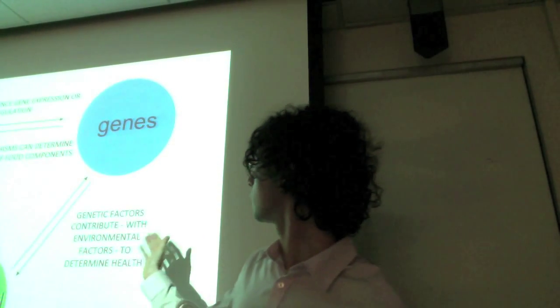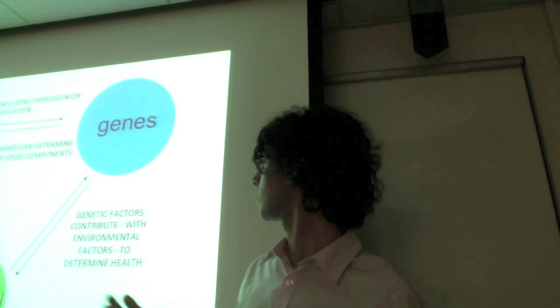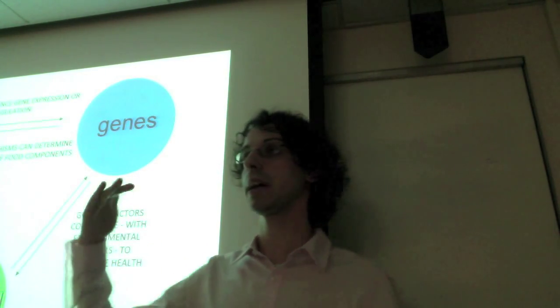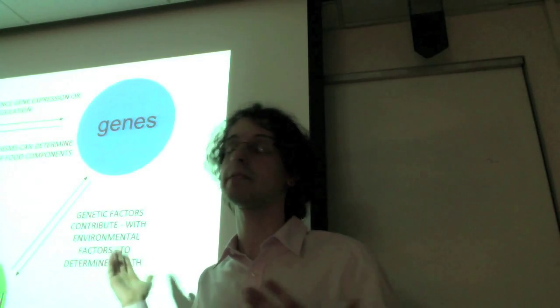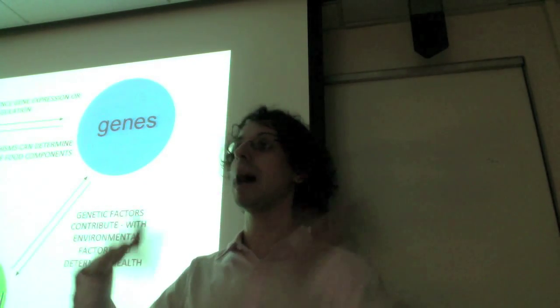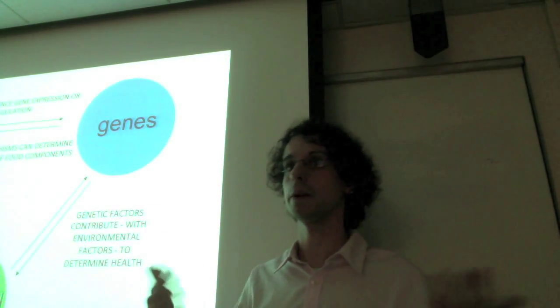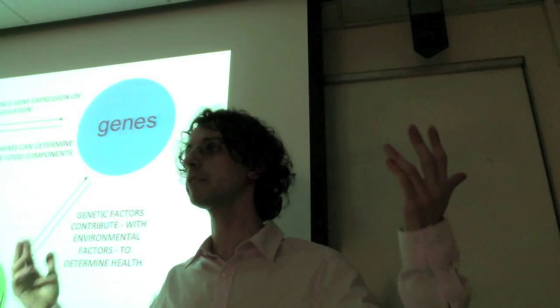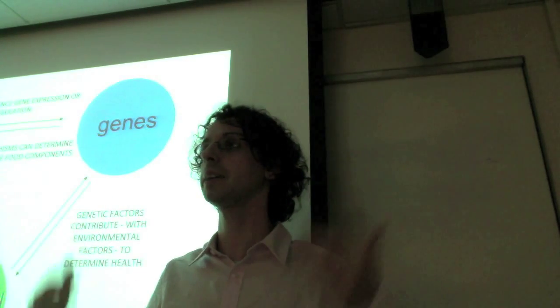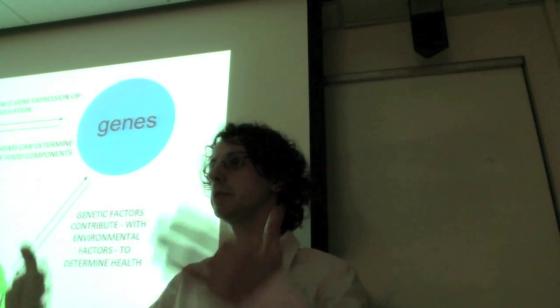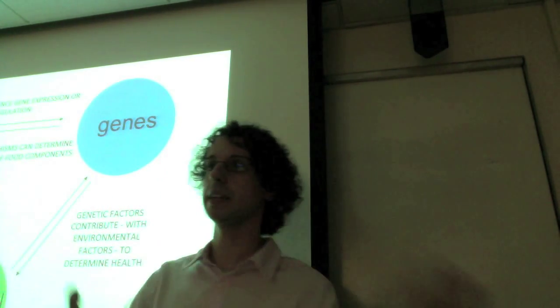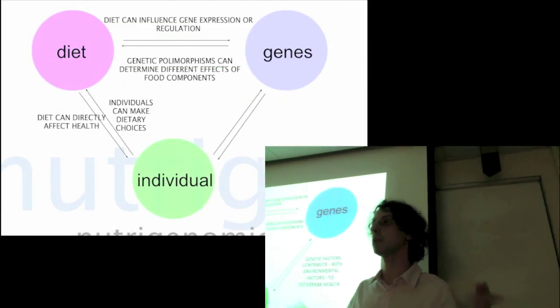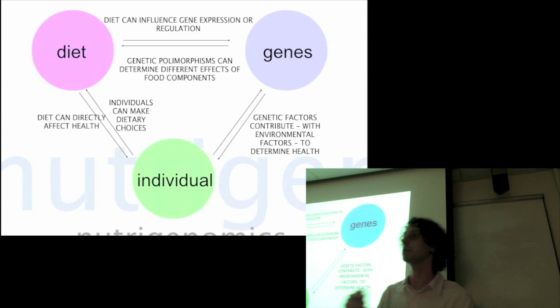And so genetic factors contribute together with the environment to determine health, and if we know how this happens, we can kind of use diet, which is an environmental factor, to balance our genetic situation. We may be genetically more at risk for, say, colon cancer, but then we can compensate with diet, and doing what it needs to do to prevent colon cancer, like eating less red meat and so on, becomes very important compared to the rest of the population, because you are specifically at risk for colon cancer.